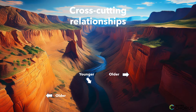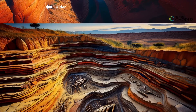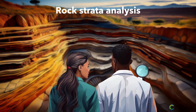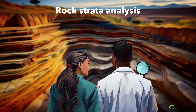For a more challenging example, let's think about how scientists use rock strata analysis to understand mass extinction events. By examining layers of rock containing fossilized remains, scientists can infer the timing and causes of these catastrophic events.